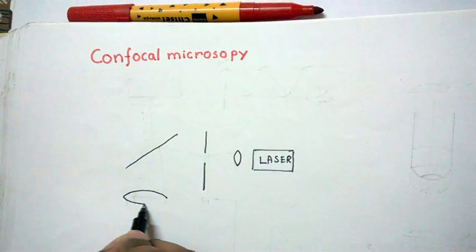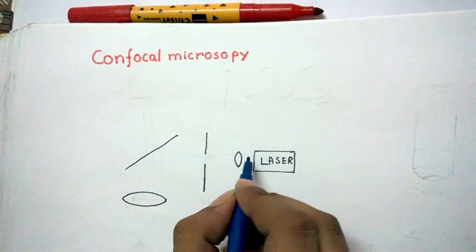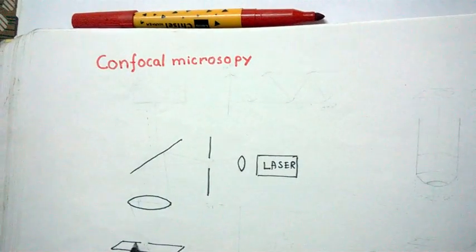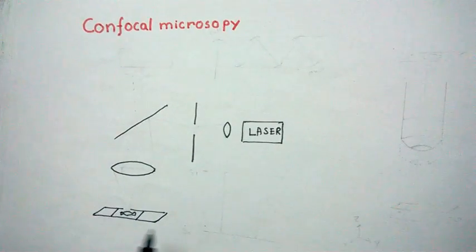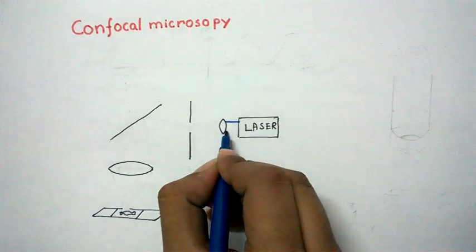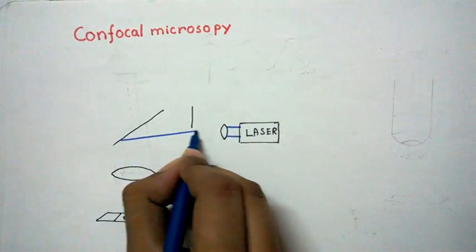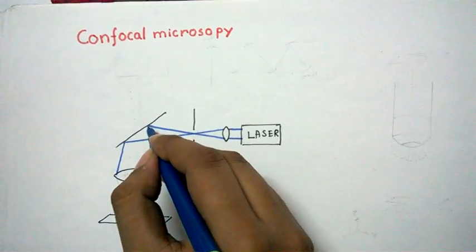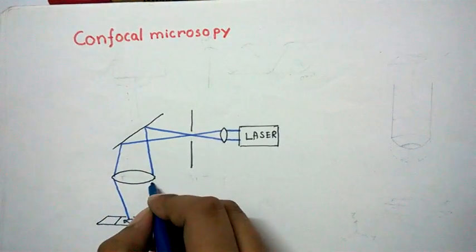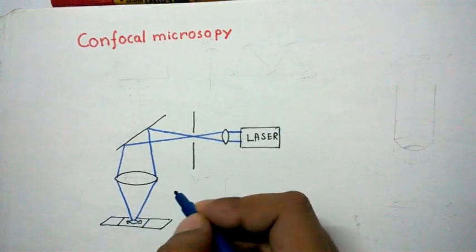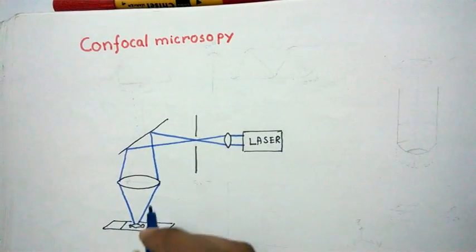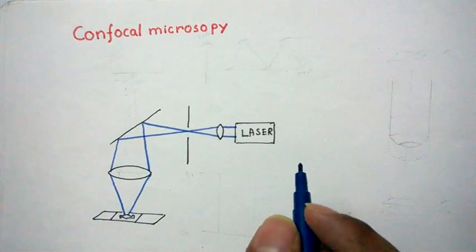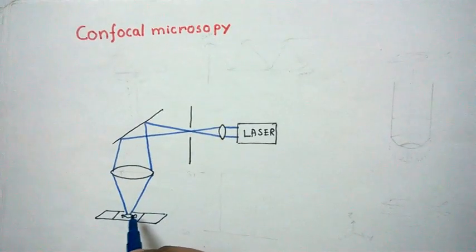Here we have our objective lens. Now let us illuminate the specimen which is present here — say for instance it is a cell — and let's illuminate it with blue light. The laser would go to this dichroic mirror, be reflected down through the objective lens, and be tightly focused onto a diffraction-limited spot into the specimen. That's the property of laser, and due to its high degree of spatial coherence, laser can be tightly focused onto a particular spot.